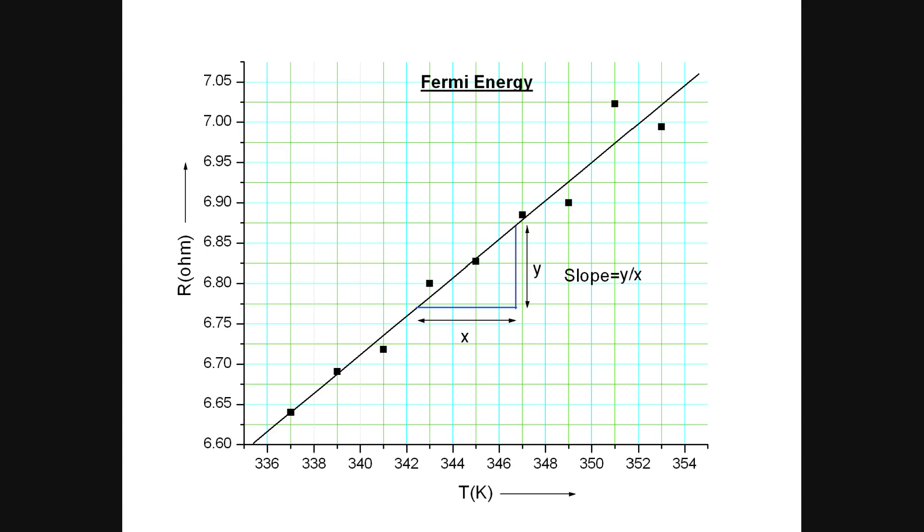A graph of resistance versus temperature is plotted with resistance in ohm on the y axis and temperature in Kelvin on the x axis. The slope of the graph is found and is substituted in the formula to obtain the Fermi energy of copper.